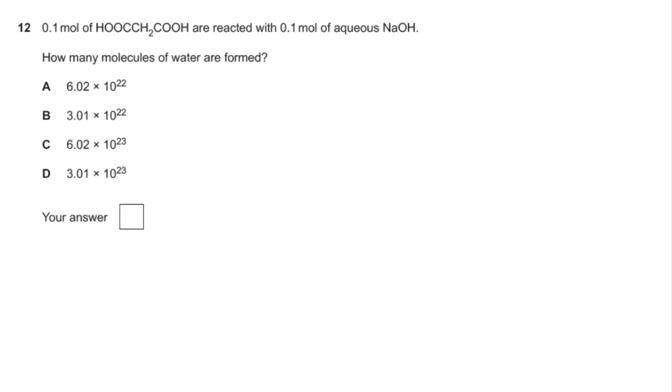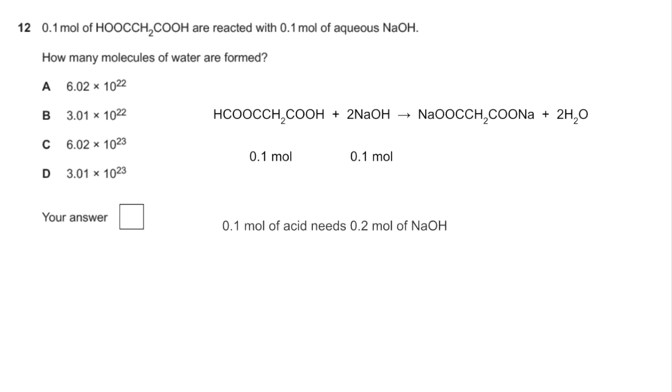Number twelve. This one's testing your knowledge of the reactions of carboxylic acids. So this carboxylic acid is going to react with two moles of sodium hydroxide as the equation. So if we've got 0.1 moles of that and 0.1 moles of that, and if we think about it, if we have 0.1 moles of the acid, we're going to need 0.2 moles of sodium hydroxide, so there's not actually enough sodium hydroxide to react with all of the acid.